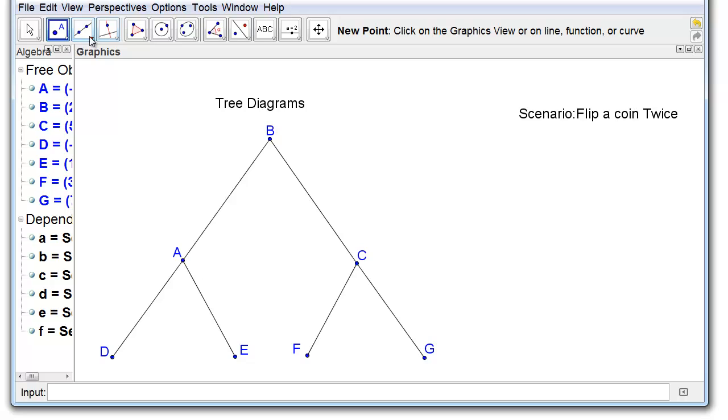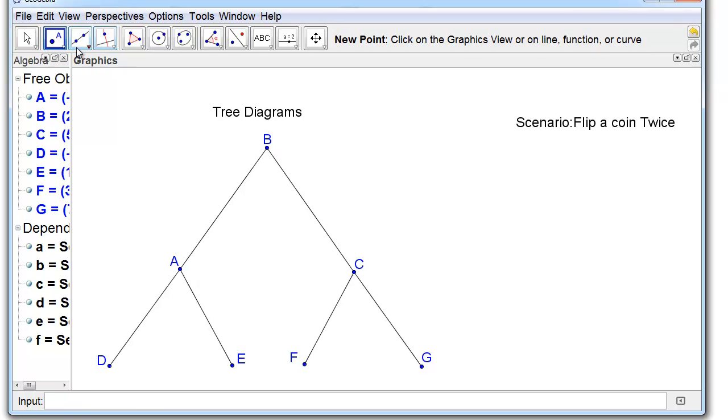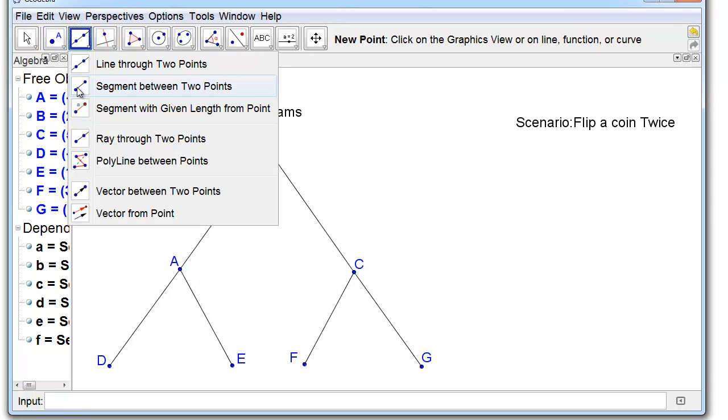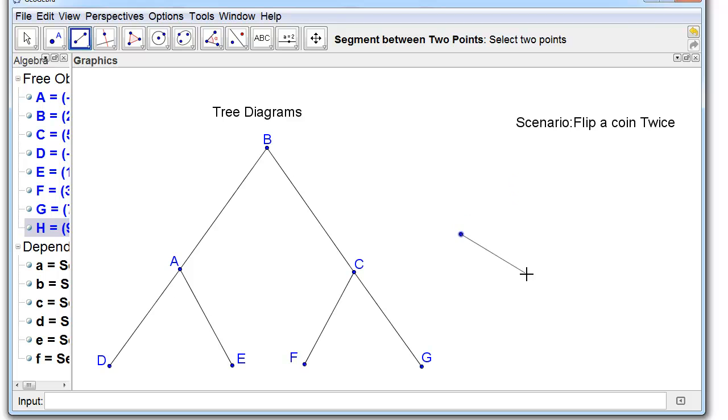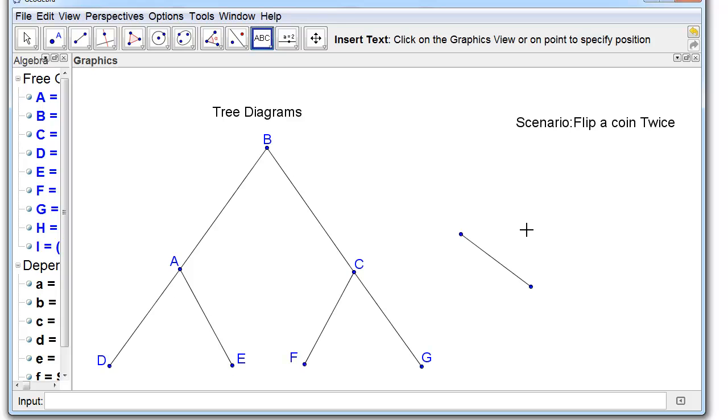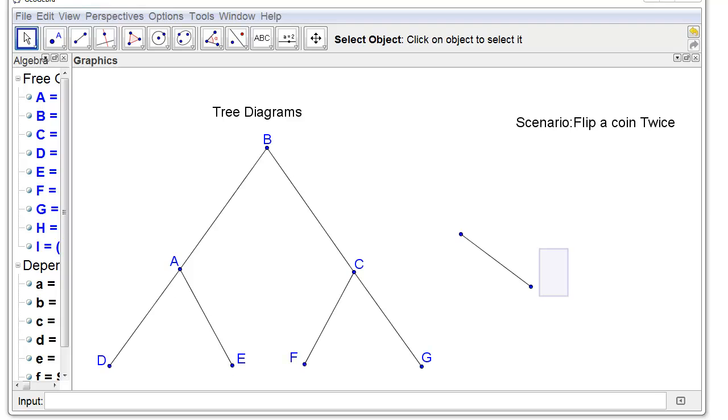Now it might be a little bit crude, but basically you can make line segments just by selecting it from the menu here and you make two points, and you can put your answers and everything else right on the diagram. You might have to play with it a little bit, but you can make a tree diagram in GeoGebra. You can make it in Geometer Sketchpad.